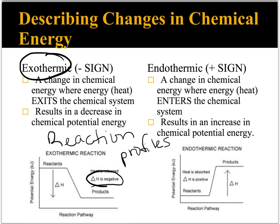In an endothermic process, it's a change where chemical energy enters the system. The surrounding environment loses energy to the chemical reaction or the process happening. There's energy getting stored up in chemical bonds to be used later, so the products have higher energy than the reactants. In this case, delta H is positive, and we'll talk about what that means.